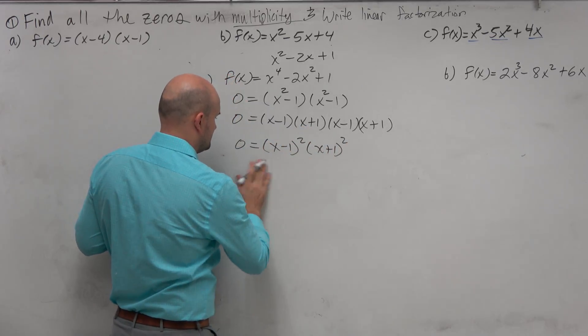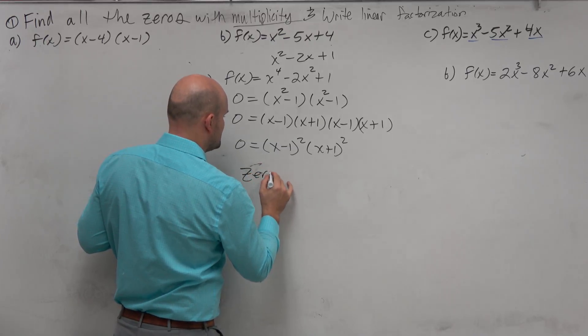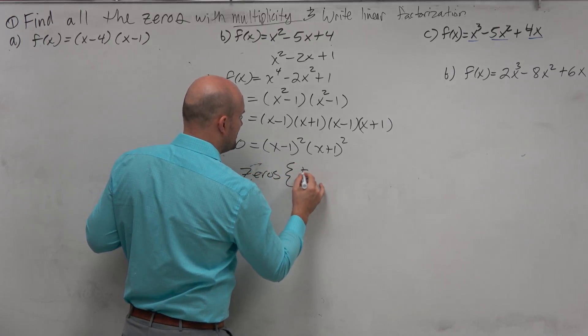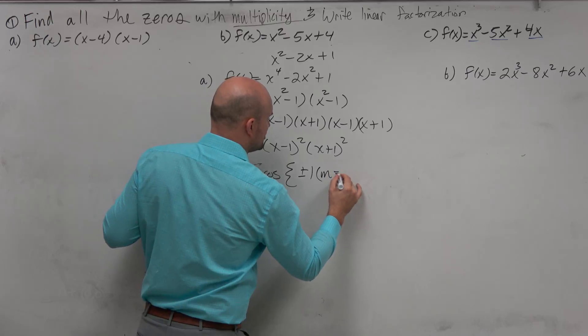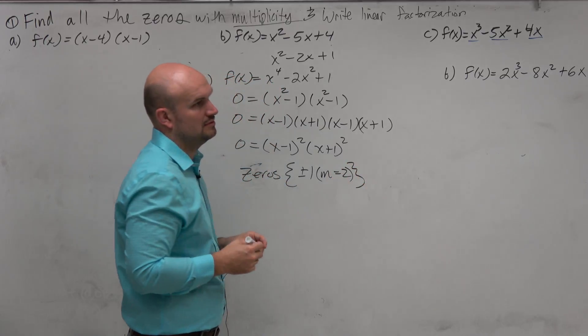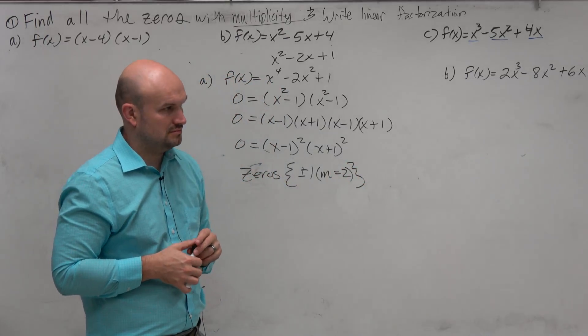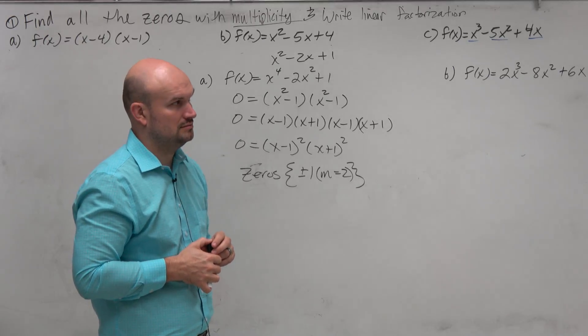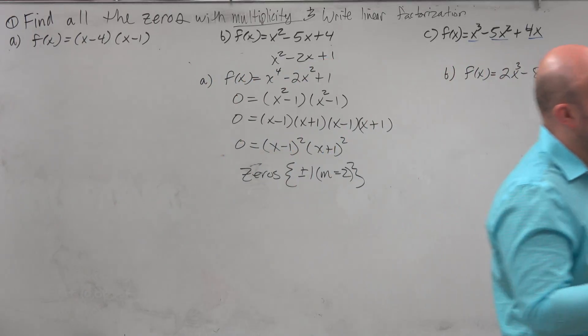So what's happening here is my zeros are plus or minus 1 with a multiplicity equal to 2. So just be careful with that. Make sure you guys can see. Remember the definition of zeroes.